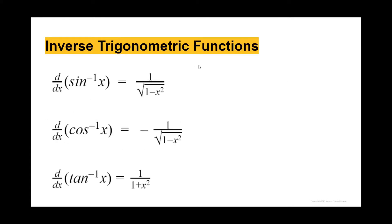For our inverse trig functions: the derivative of inverse sine equals 1 divided by the square root of 1 minus x squared. The derivative of inverse cosine of x equals negative 1 divided by the square root of 1 minus x squared. The derivative of inverse tangent x equals 1 divided by 1 plus x squared. Make note that the inverse of cosine is negative.